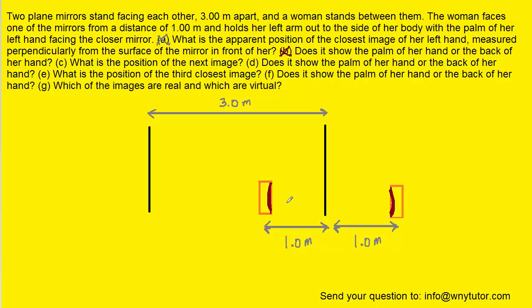Now to part C, which is asking us the location of the next image — that means the next image in this mirror right here. There's going to be some other image located even further back behind this mirror, and our goal is to find out how far behind the mirror that second image is located. We have to note that there's another mirror behind her, and her left hand is located two meters from that other mirror, because the distance between the mirrors is three, and the distance from her left hand to the nearest mirror is one, which means the other distance is two.